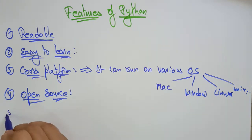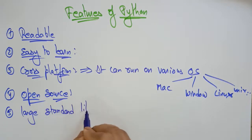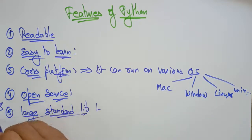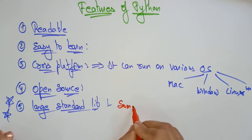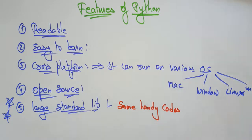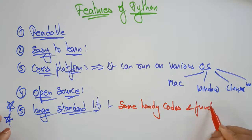The next feature is large standard library. This is one of the important features of Python, and that's why everyone is using Python — because of this feature. It supports a large standard library, which means it comes with large standard libraries that have handy codes. These are already-built-in functions, so you just need to call that function and execute the program without writing the code yourself. This is one of the added advantages of Python.